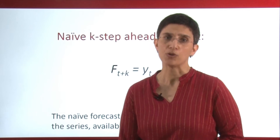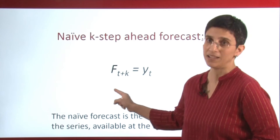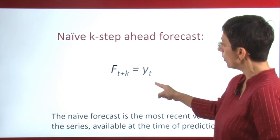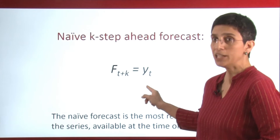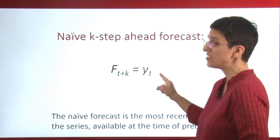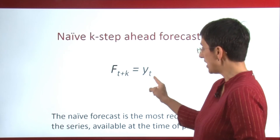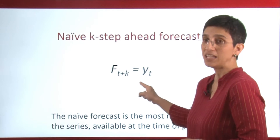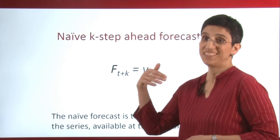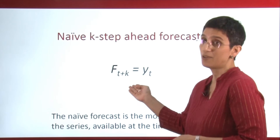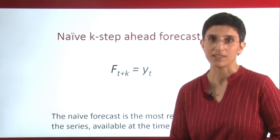If you remember our notation, it means that the k-step ahead forecast is simply the most recent value at the time of prediction. Here we're assuming the time of prediction is t, so we have information until time t. And the same forecast is going to be our naive forecast for tomorrow, the day after tomorrow, the two days after tomorrow, et cetera. That is the naive k-step ahead forecast.